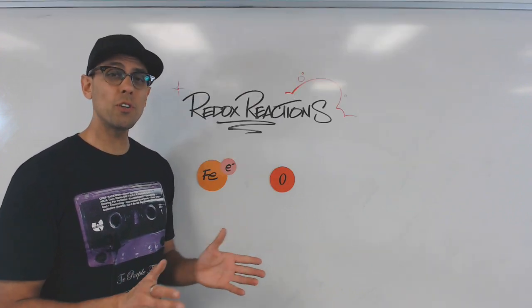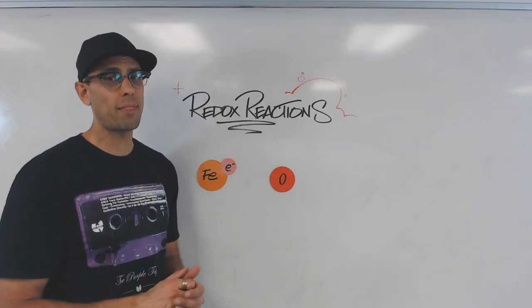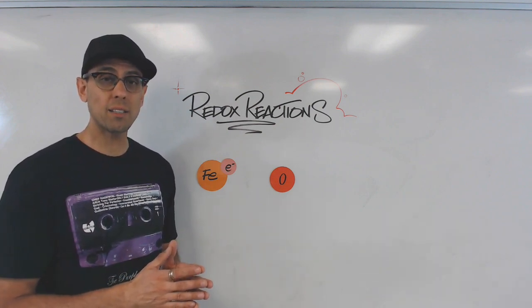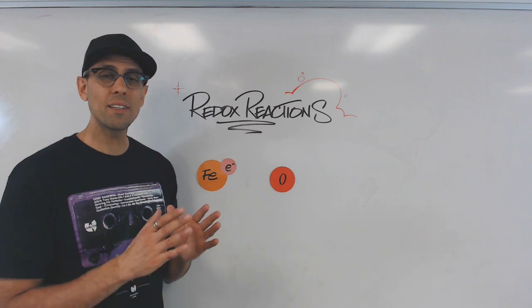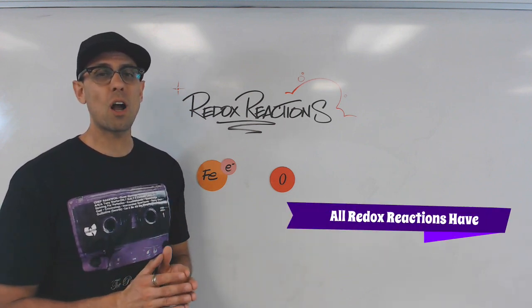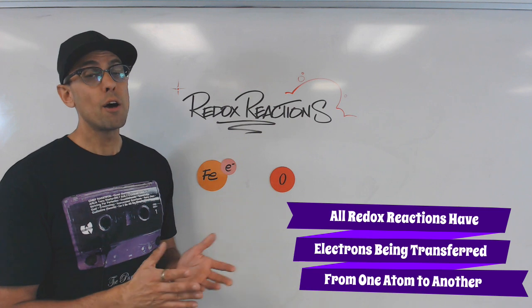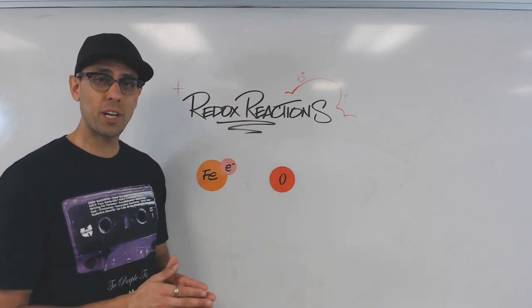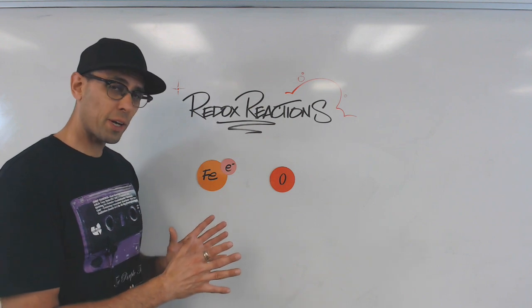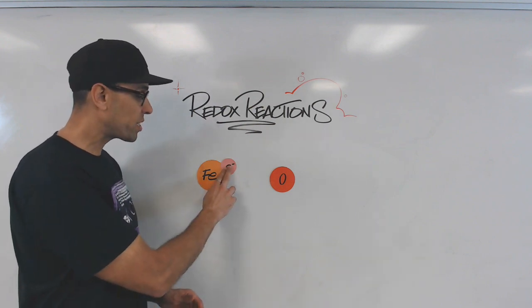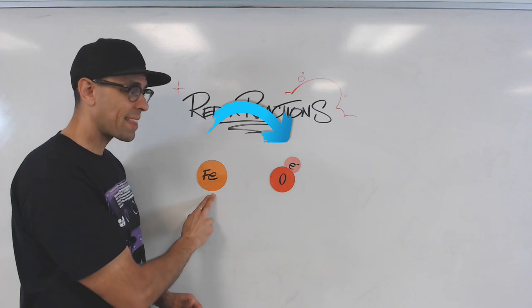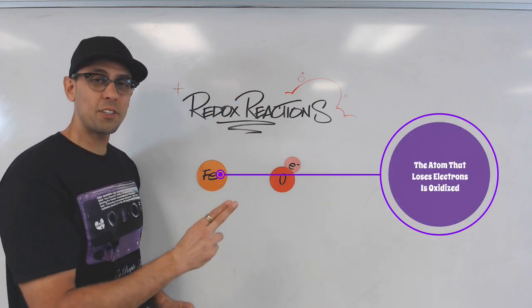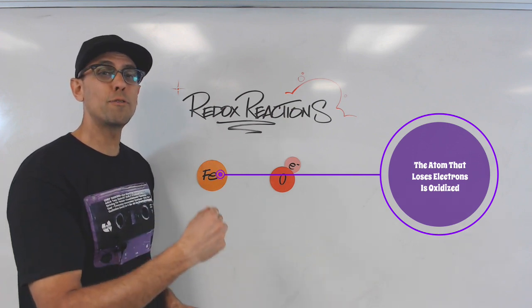It turns out there's only one single event that has to occur in order for a reaction to be labeled or classified as redox. And that event is the simple transfer of electrons from one atom to another. For example, let's say we have an iron atom that's about to react with this oxygen atom. If in the process of reacting, this iron atom loses an electron to the oxygen, we would say that the iron has been oxidized. Oxidation is the loss of electrons.